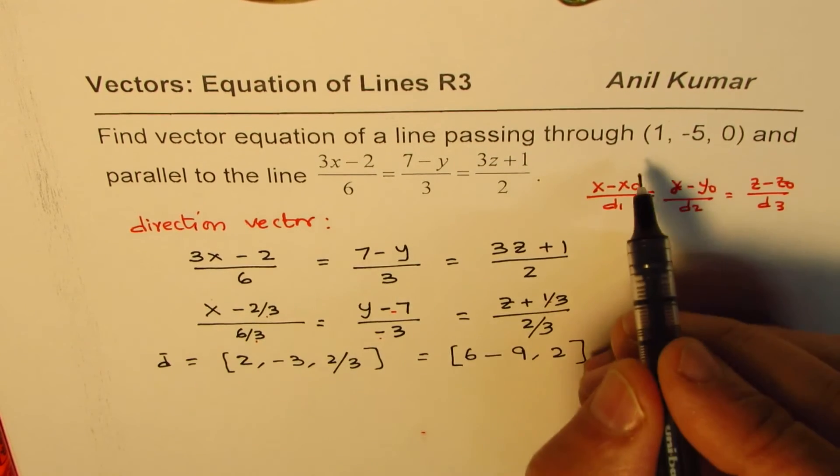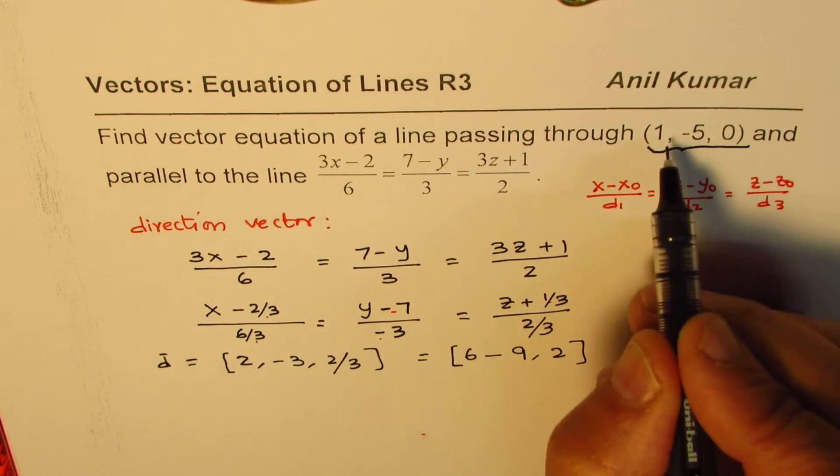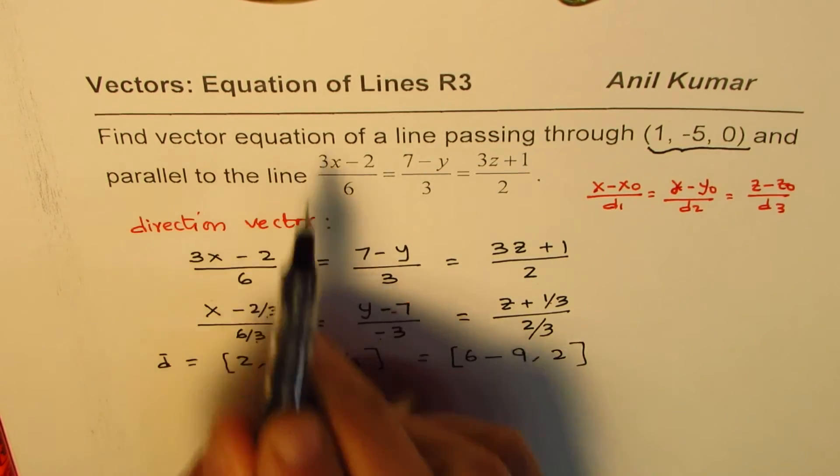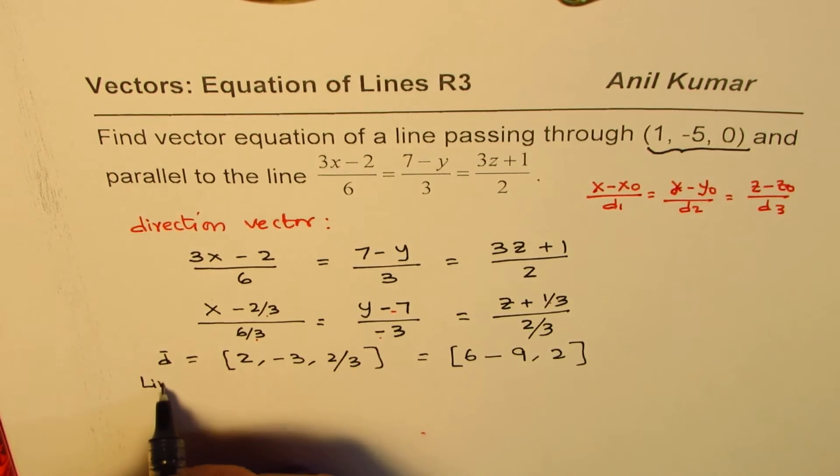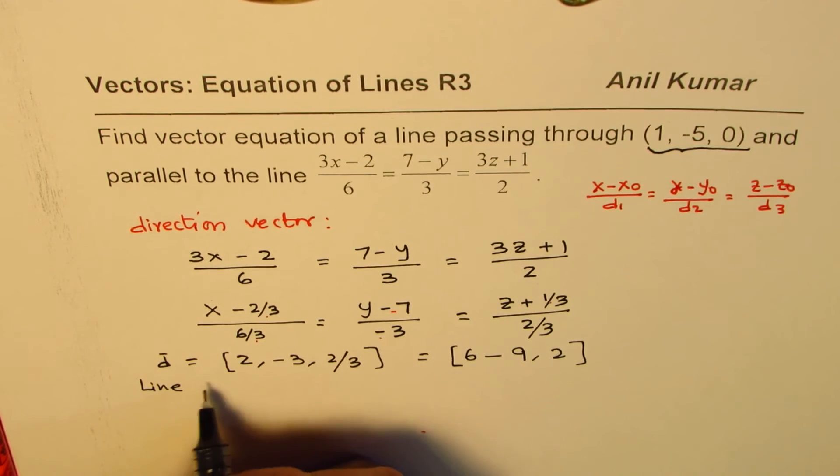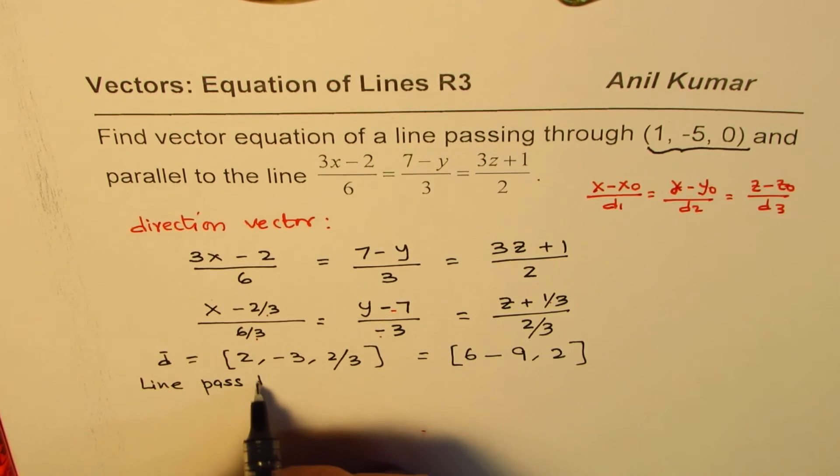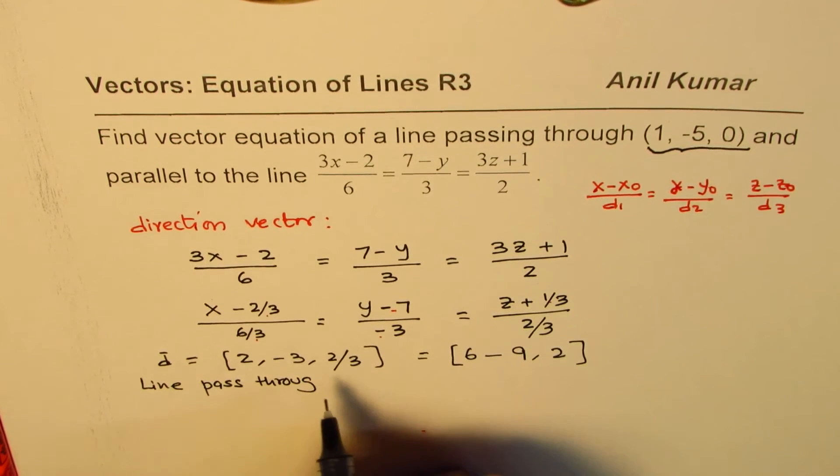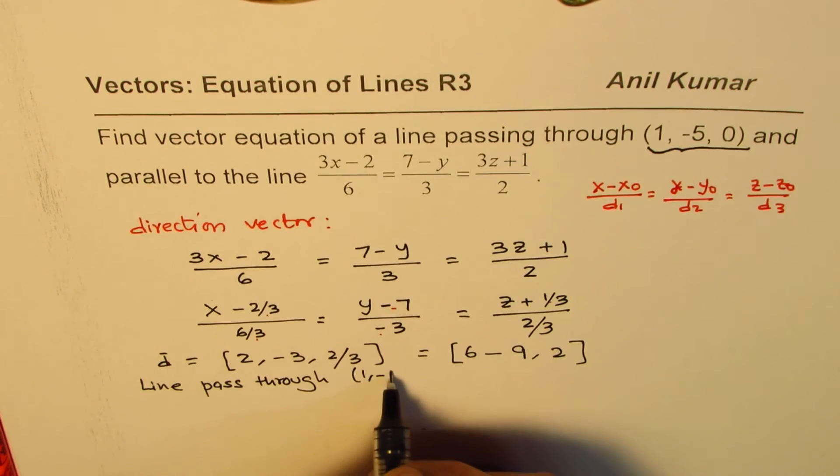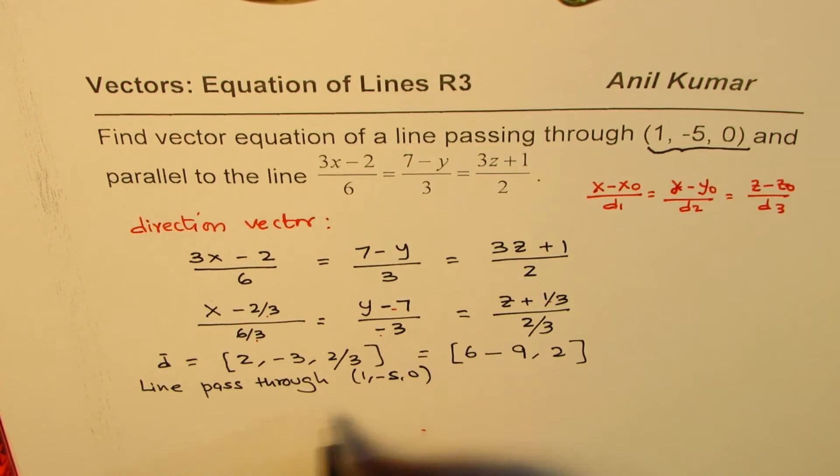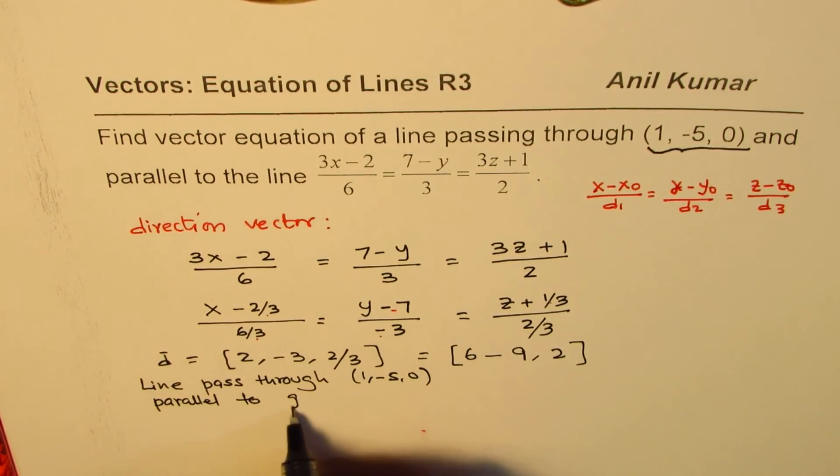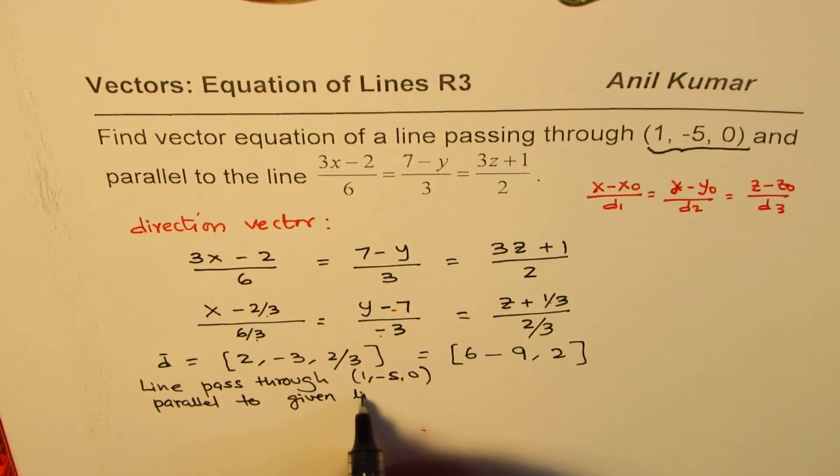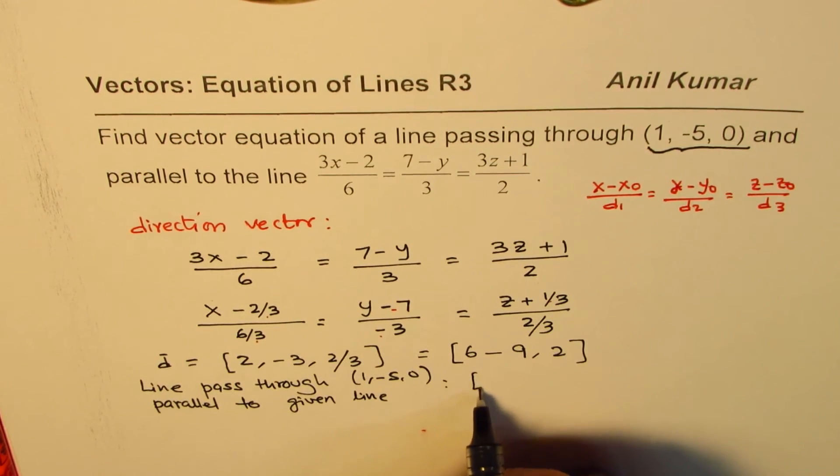Now, once we have got the direction vector, we know that the point is (1, -5, 0). So we can write the vector equation of the line which is passing through this point and parallel to this. So we are now writing the line which will pass through the point (1, -5, 0) and parallel to the given line. So that should be, let's say, x, y, z equals to